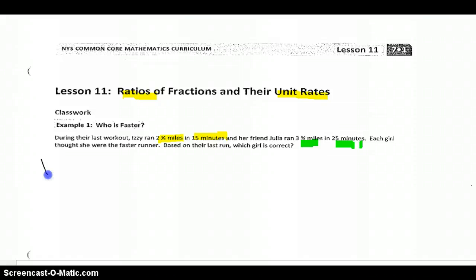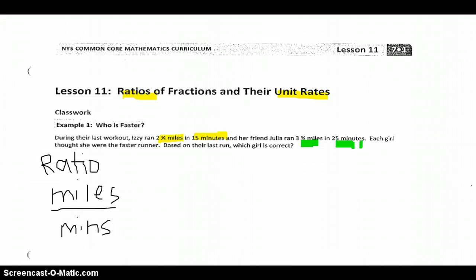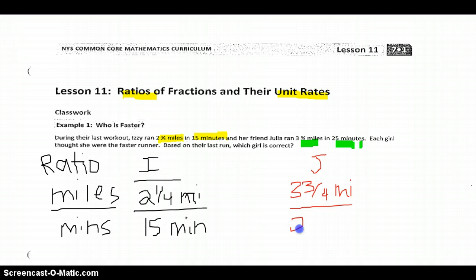If we were to make a ratio of these two fractions, then the ratio that we're going to create is going to be their miles over their minutes. Let's first take Izzy, she has 2 1/4 miles that took her 15 minutes. I'm sorry, I'm working off a new laptop and the stylus is actually quite squishy, so the writing is not as great. Then we have her friend Julia, who is running 3 3/4 of a mile out of 25 minutes.